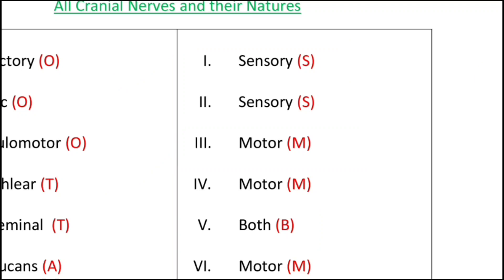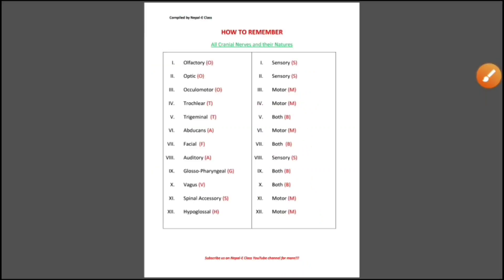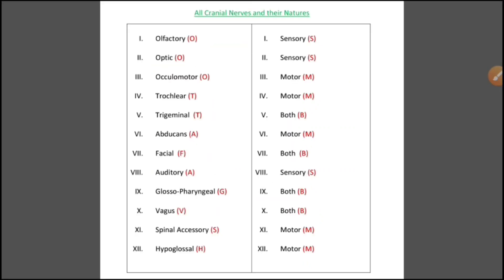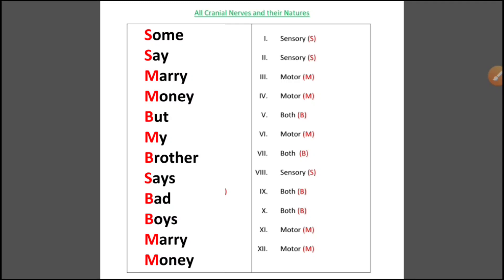You can remember the nature of the cranial nerves with another mnemonic. As you can see on the left side of your screen: 'Some say marry money but my brother says bad boys marry money.' This helps you understand the sensory, motor, or mixed nature of each cranial nerve.